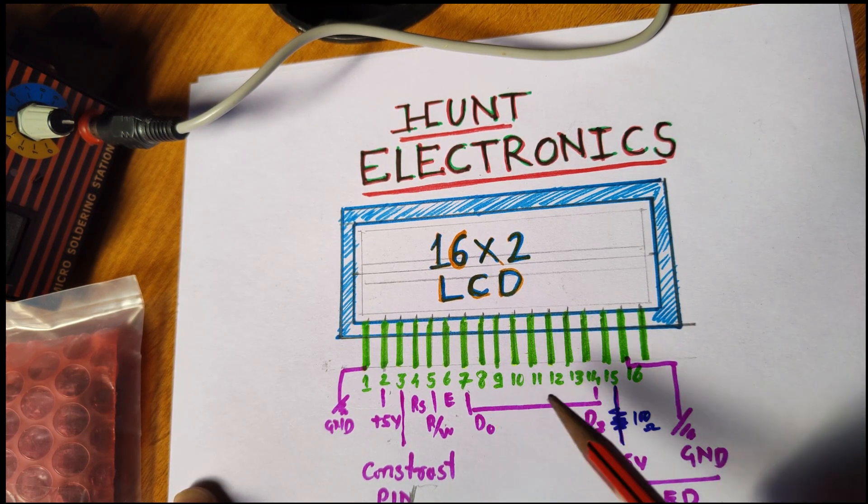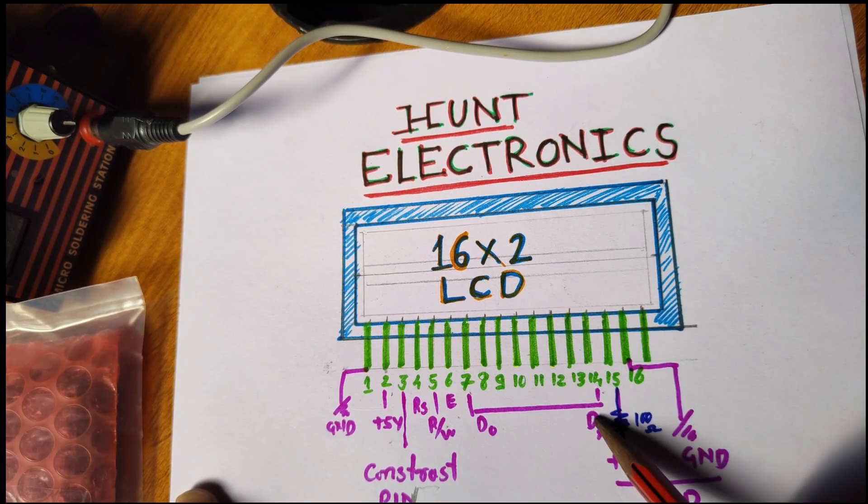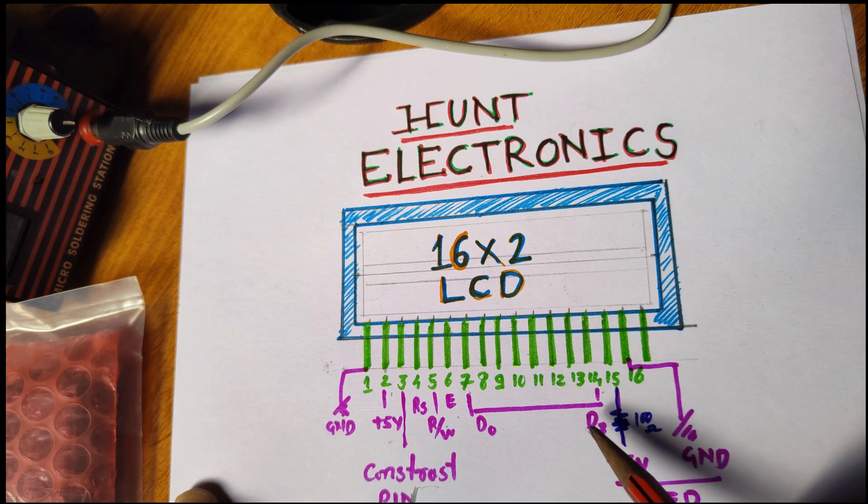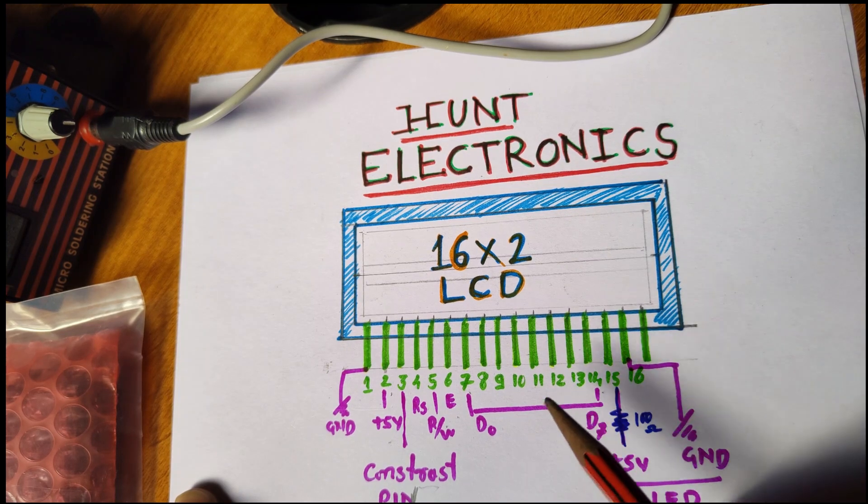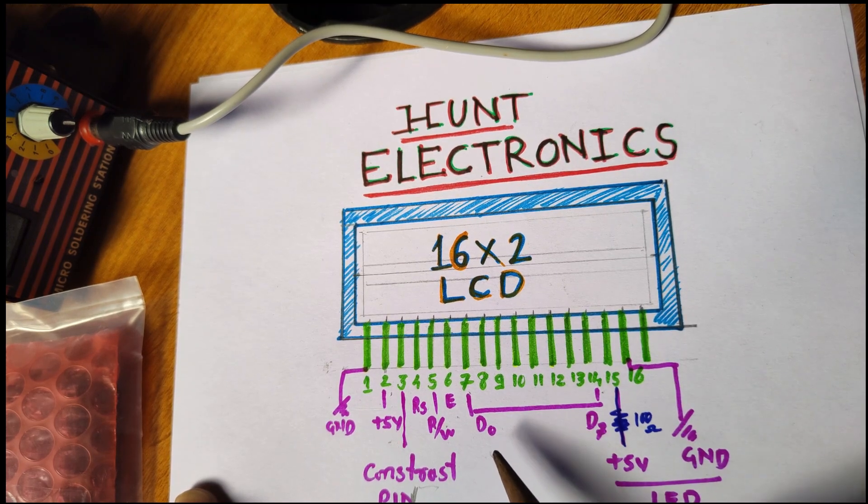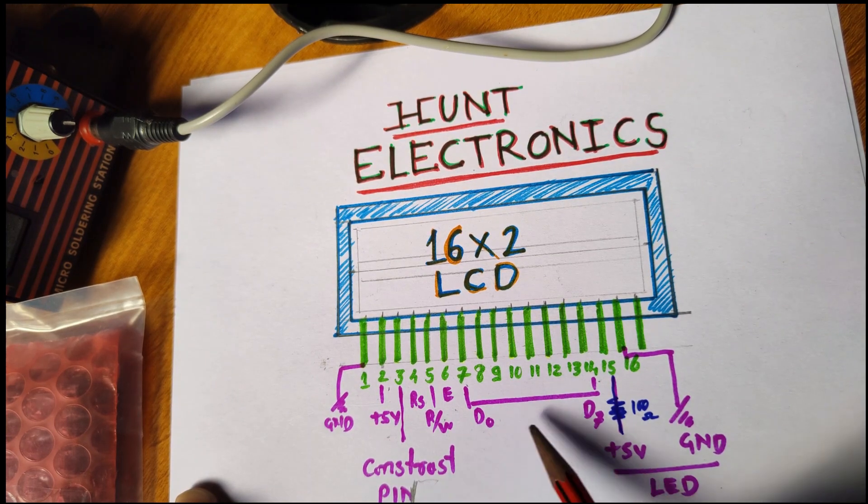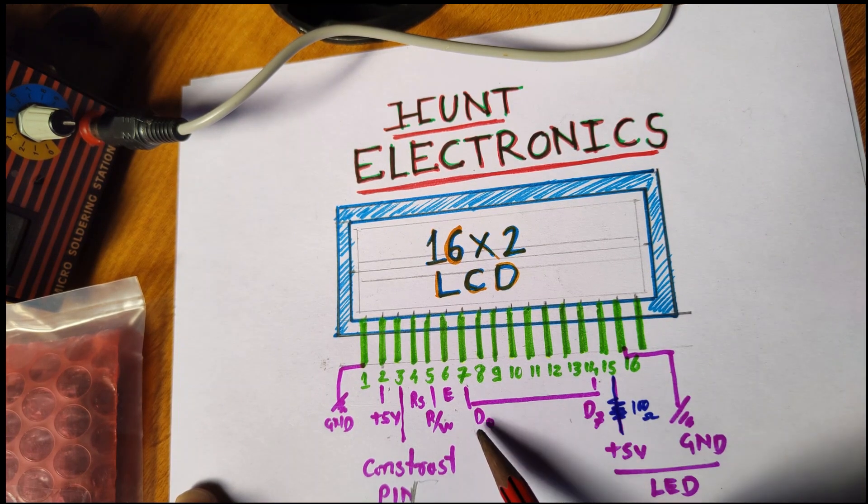From pin number seven to pin number fourteen, this is our data pin. When we are interfacing a display to any microcontroller or Arduino, the programmer is going to program it for either 4 bit or 8 bit mode.